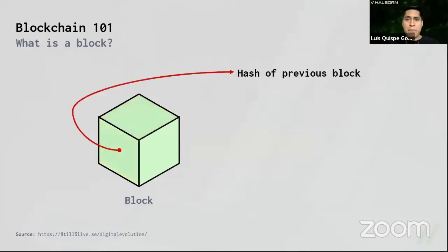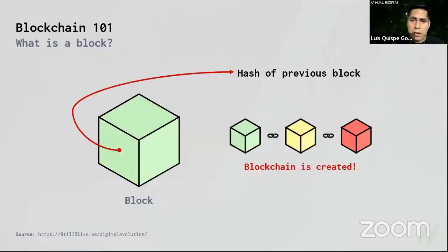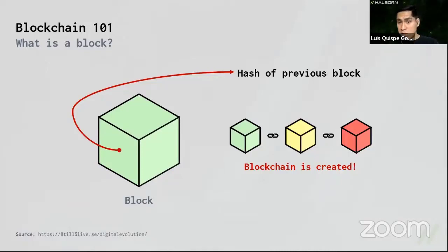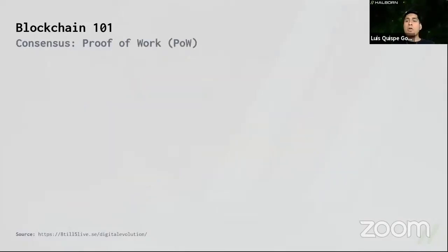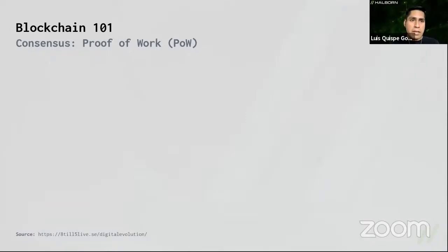We also have the hash of the previous block, so with those three elements we now have a blockchain. What happens if an attacker wants to tamper with our blockchain? Blockchain has two powerful mechanisms to avoid it. The first is called consensus — regarding Bitcoin and Ethereum, the consensus mechanism is called proof of work.